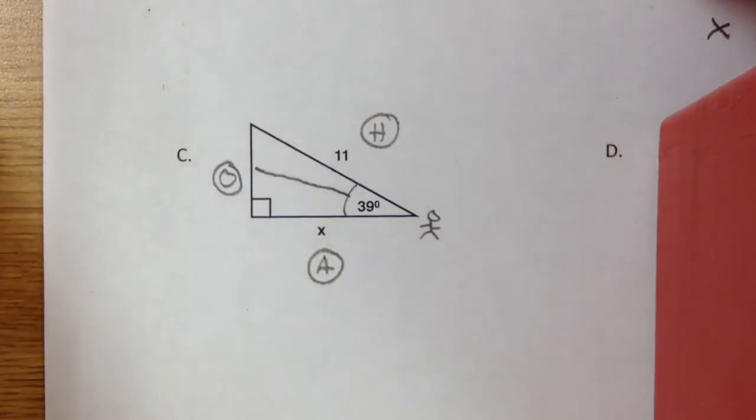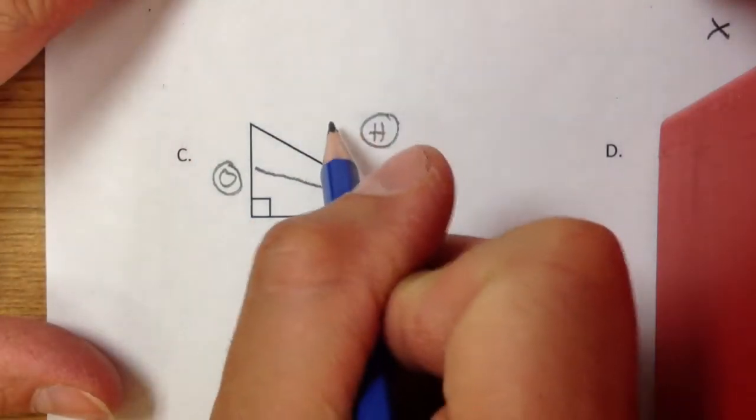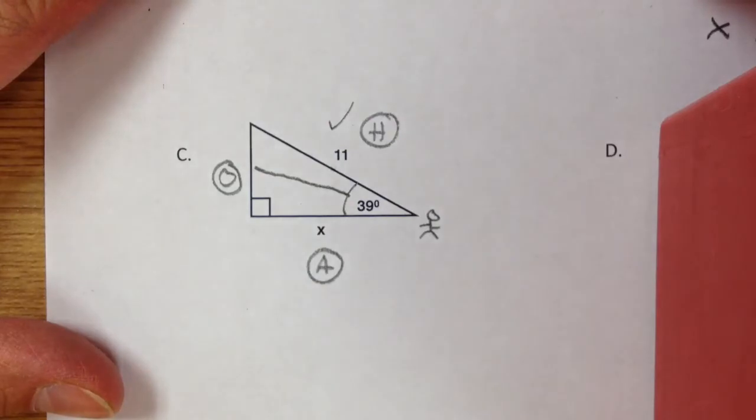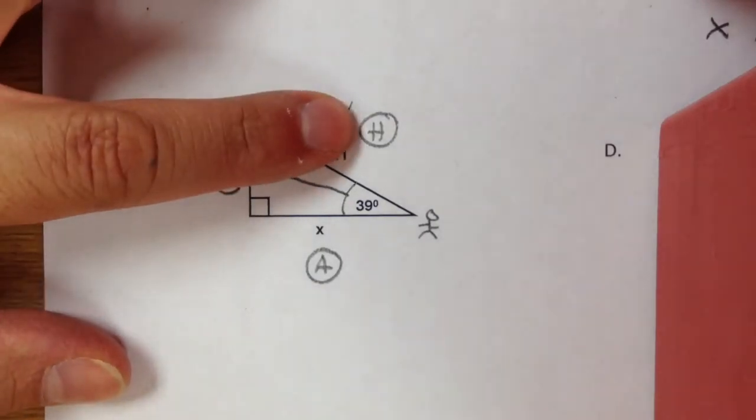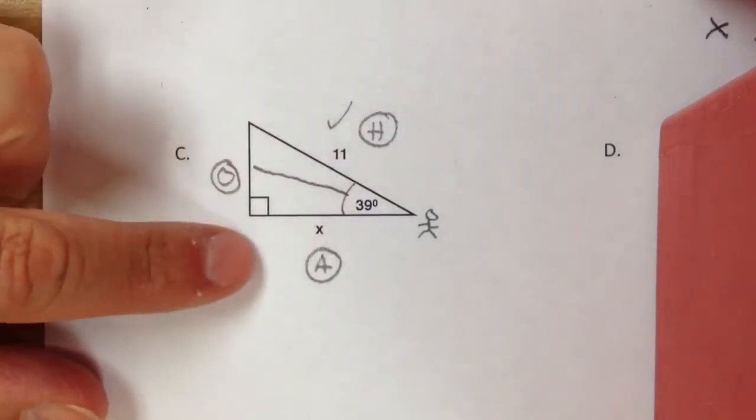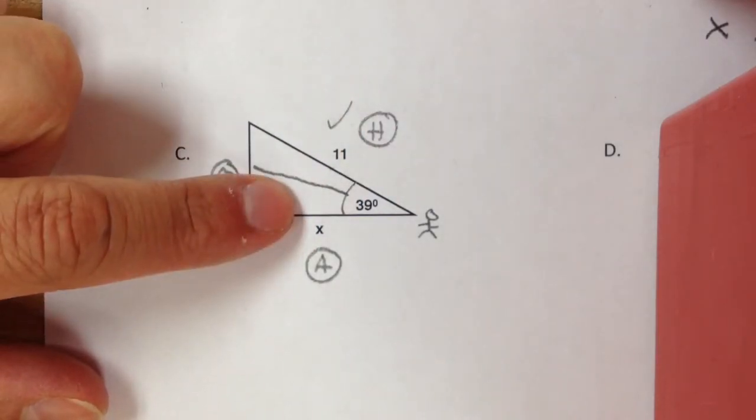do I use sine, cosine, or tangent. Here's how you figure it out. You have to use the 11 because they tell you that information, so that means you're using your H. And you have to use your A because you're trying to find X.